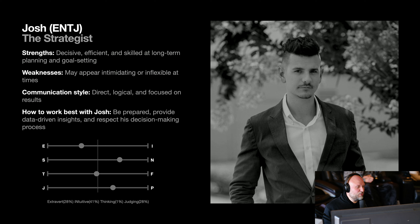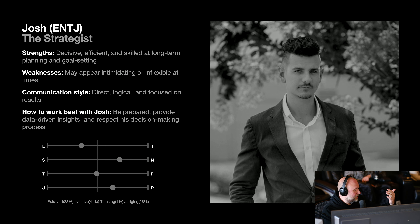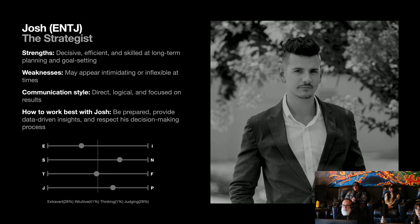Let's do Josh next. You're the strategist — an ENTJ. Strengths: decisive, efficient, and skilled at long-term planning and goal setting. Weaknesses: may appear intimidating or inflexible at times. Communication style: direct, logical, and focused on results. How to best work with him: be prepared, provide data-driven insights, and respect his decision-making process. Josh, you're the newest guy to the team — how does that feel?